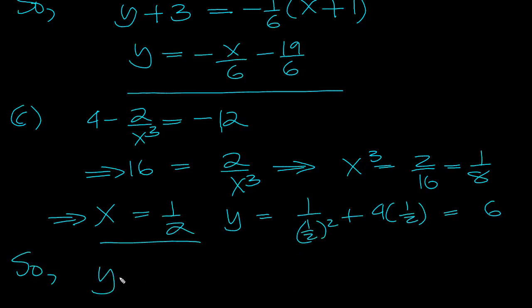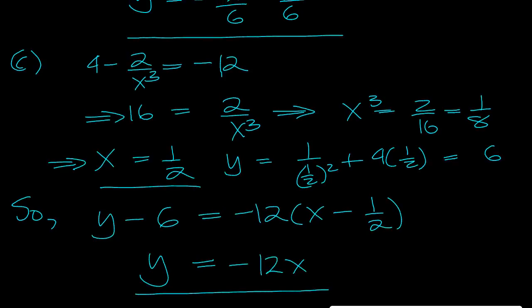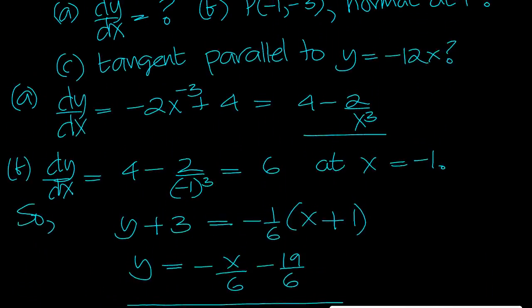So the tangent is y minus 6 equals the gradient, -12, times x minus 1/2. So y equals -12x minus 6 plus 6 is plus 0. That is the actual curve, which is the same as the one before.